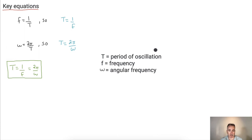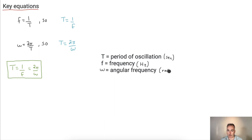Let's remind ourselves about the units. Period of oscillation is measured in seconds. Frequency is measured in one over seconds, otherwise known as hertz. And angular frequency is in radians per second — we're counting how fast something is going around a circle.